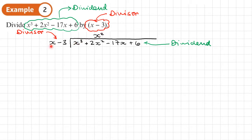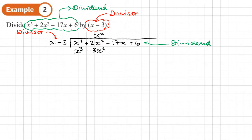Step two is to multiply what we've got — X squared — by the full divisor. So X squared times X gives X cubed, and X squared times negative three gives minus three X squared. Notice how the powers are all lined up. Then we underline and subtract to work out the remainder. X cubed minus X cubed is zero — this should always happen in the first column.